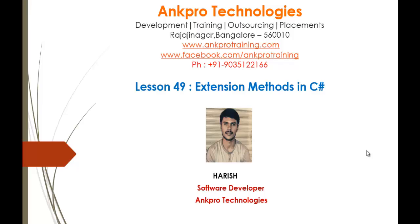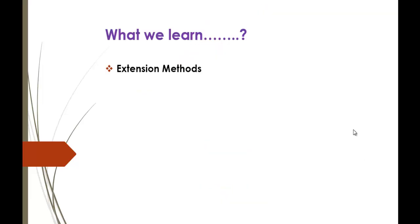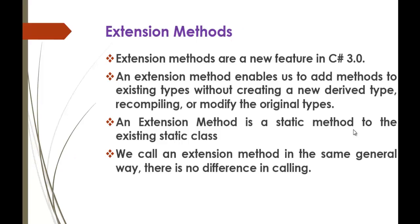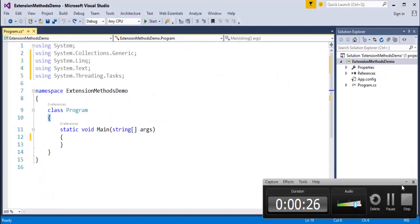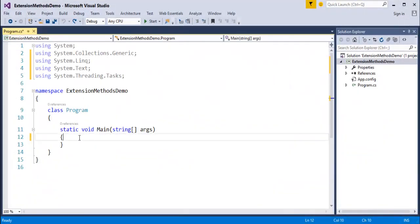Hello, welcome to lesson 49 - Extension Methods in C#, brought to you by Ancro Technologies. My name is Harish. In this session we're going to learn what is an extension method. Extension methods are a new feature in C# 3.0. An extension method enables us to add methods to existing types without creating a new derived type, recompiling, or modifying the original types. To understand it very clearly, we'll jump into Visual Studio and start coding.